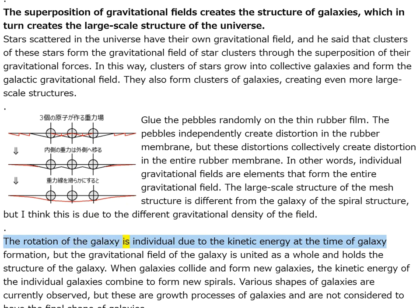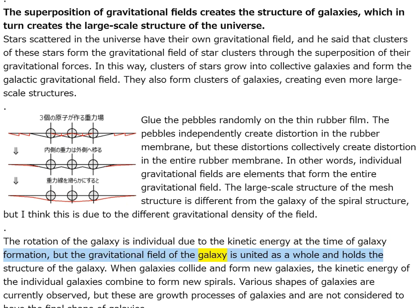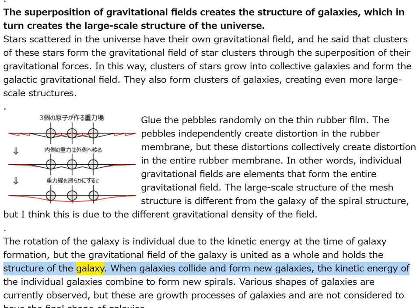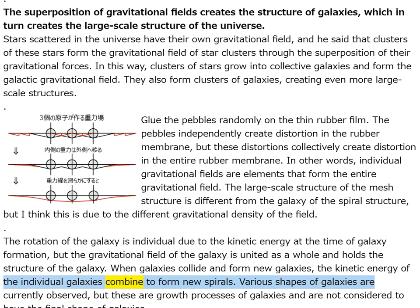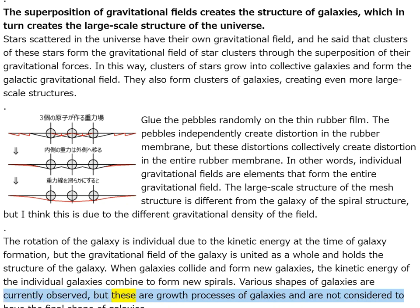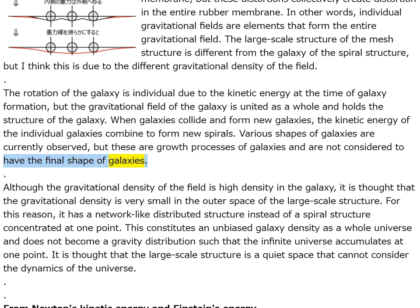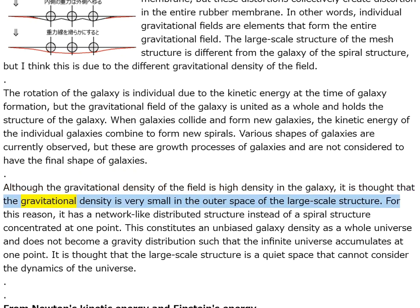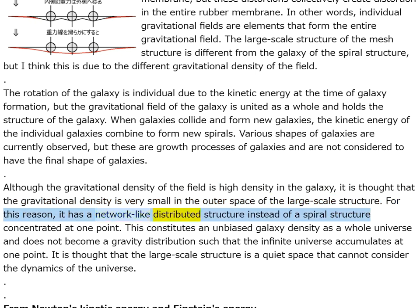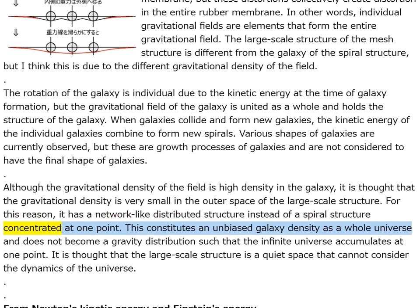The rotation of the galaxy is individual due to kinetic energy at the time of galaxy formation, but the gravitational field of the galaxy is united as a whole and holds the galaxy's structure. When galaxies collide and form new galaxies, the kinetic energy of individual galaxies combines to form new spirals. Various galaxy shapes are growth processes. Although gravitational density is high in the galaxy, it is very small in the outer space of the large-scale structure — hence a network-like distributed structure instead of a spiral structure concentrated at one point.